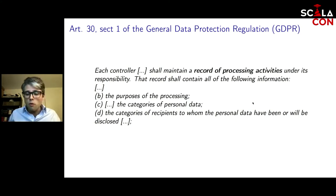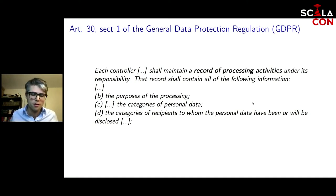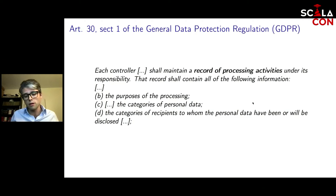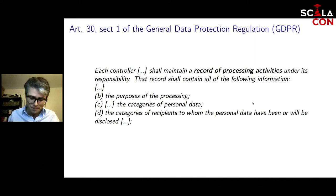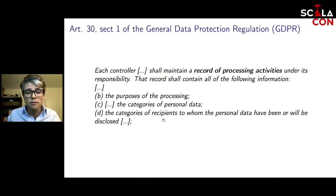Most companies just take their data model and look at their database, which is a start, but it's actually about data in motion. You need to make a list of all the activities you do with data — who can read it, when do you read it, when do you delete it — and for each activity you need to describe the purposes, the categories of personal data, and the categories of recipients.